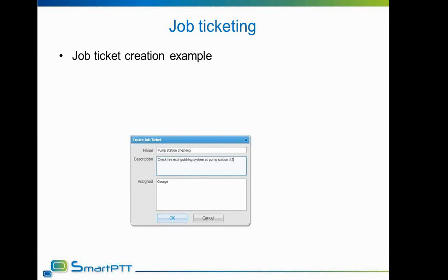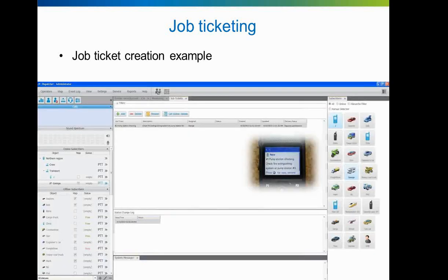Upon receiving the order, the subscriber will see a message as shown on the screenshot, and the dispatcher will see the job ticket created. Subscribers can update the status of a job ticket by sending specially made replies to show progress on the task: accepted, in progress, pending, or complete. Statuses are customizable via CPS. SmartPTT dispatcher will update this information upon receiving such messages. In summary, SmartPTT fully supports the job ticketing feature of Motorola.